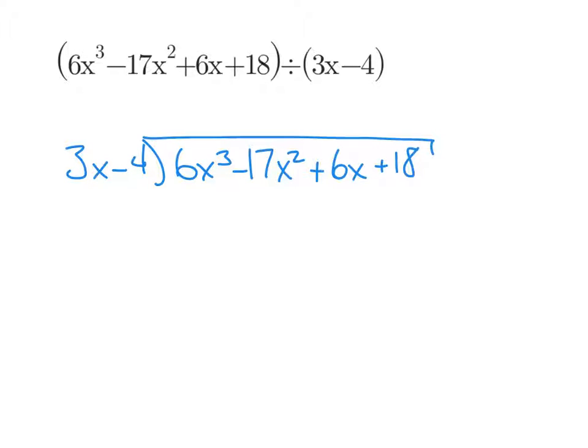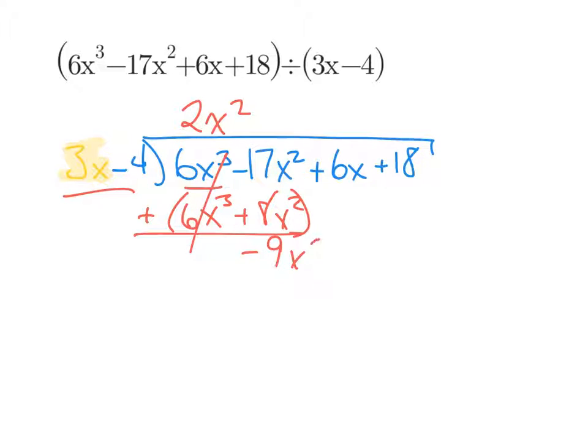So again, we're not going to worry about the entire expression. I'm just going to worry about this 3x. What do I have to multiply 3x by to turn it into 6x cubed? Well, 3 has to get multiplied by 2 and x times x squared gives me x cubed. So go back and multiply the entire expression by that 2x squared. We'll get our 6x cubed minus 2x squared times negative 4 is the minus 8x squared. When we subtract, be careful. Make sure that you subtract everything. 6x cubed minus 6x cubed cancels. But negative 17x squared minus negative 8x squared is like adding a positive 8. So we'll end up with negative 9x squared.